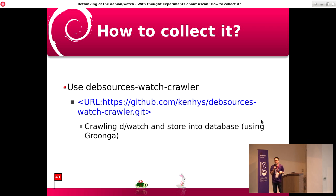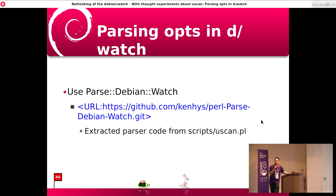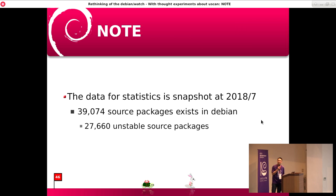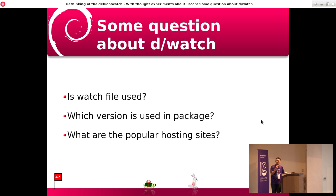It's hard to manually collect Debian Watch data, so I wrote some utility for it. For analyzing the Debian Watch file, it needs to parse options as well, so I also developed a C-Band module, exactly from UCAN. The system component diagram is here. Actually, almost 27,000 unstable source packages are there, so it leads to some questions about Debian Watch.